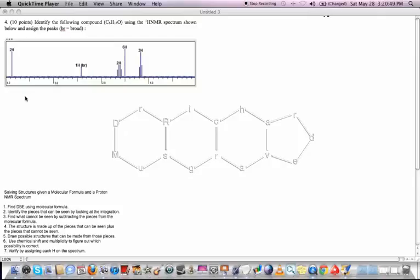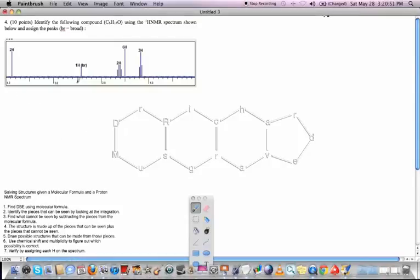Alright, so our first step is we need to figure out what the double bond equivalents are in the compound. So it's C6H14O. We take a count of the oxygen, which is not going to affect the calculation. So it would be C6H14.